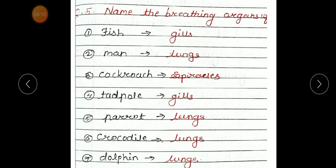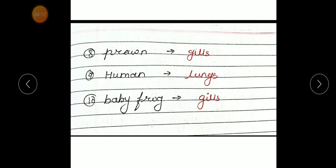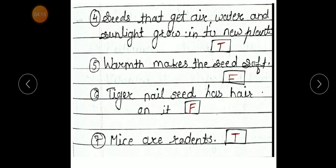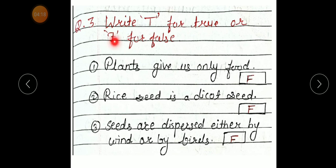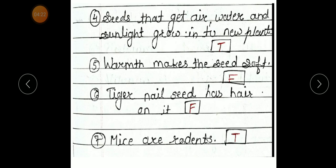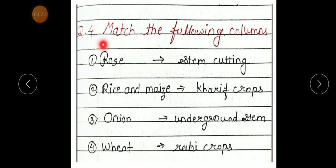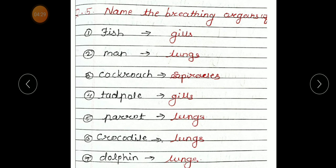Complete the revisions. Today we learned question 3, write T for true or F for false. Question number 4, match the following columns. And question number 5, name the breathing organs of. Write down in your science notebook and learn also, because it is very important. Thank you.